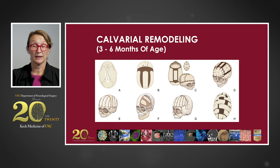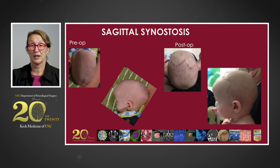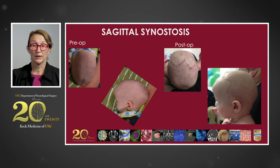The typical calvarial remodeling, performed at three to six months of age, has been described in a variety of methods. Depending on the shape of the skull and the degree of frontal versus occipital bossing or bitemporal narrowing, there are many different options for calvarial vault remodeling for treatment of sagittal synostosis. The pre- and postoperative pictures show a top-down and side view of a child with sagittal synostosis — the head is very narrow and very long preoperatively — and about two weeks postoperatively the head is shorter, wider, and much more round.